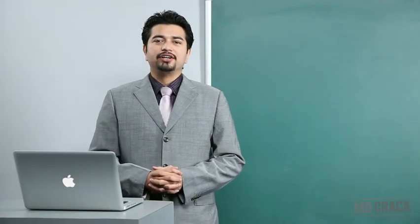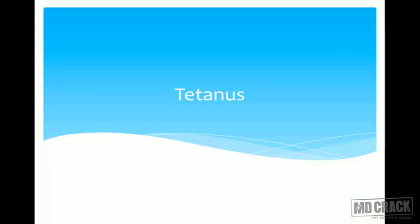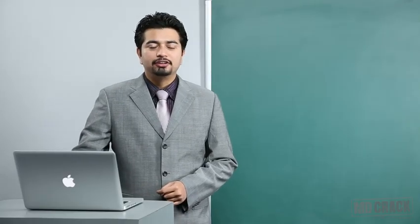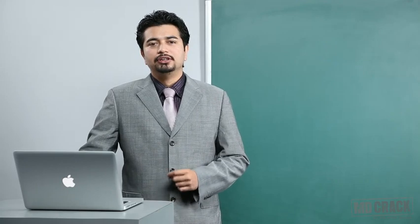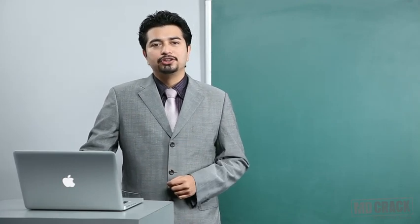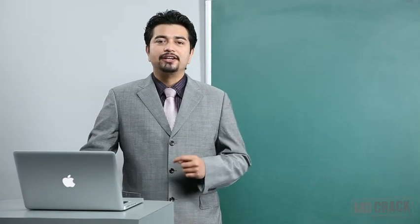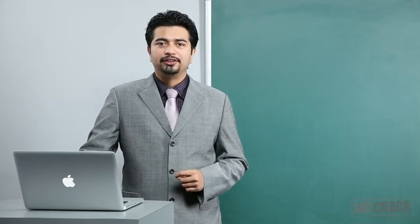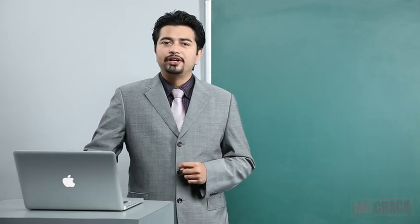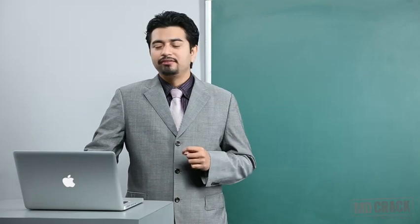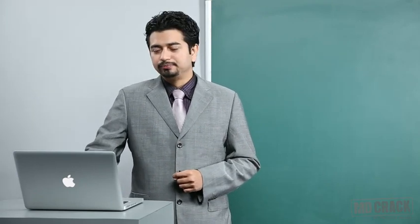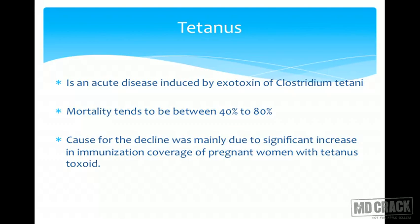Welcome back. Today we are going to start with tetanus. Tetanus is a disease which was important and unfortunately still is important. Tetanus nowadays is not more important in adults, but the prime importance of tetanus has shifted. It is now more important in children — something called tetanus neonatorum. Tetanus neonatorum is a grave killer of children, and we are going to see how tetanus affects and how to control it.